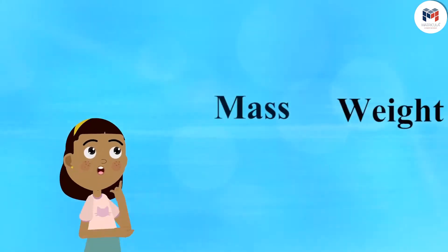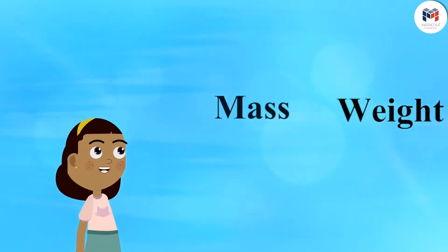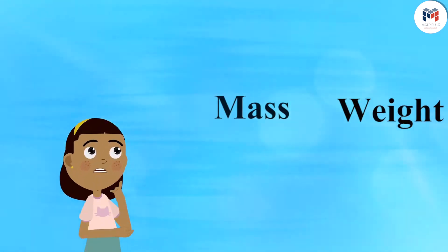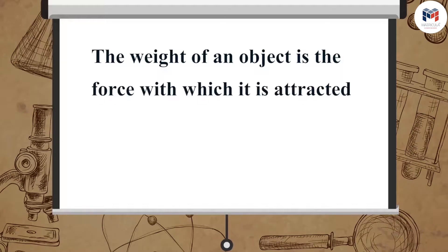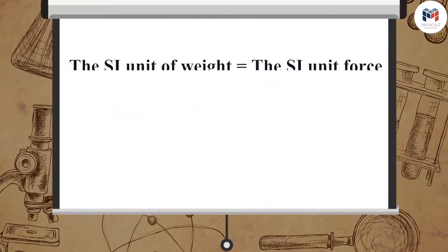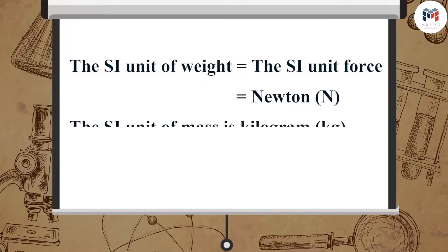Mass and weight are two different properties of an object, and that is why they have different units of measurement as well. As the weight of an object is the force with which it is attracted towards the earth, its SI unit is the same as that of force, which is Newton. Whereas the SI unit of mass is kilogram.